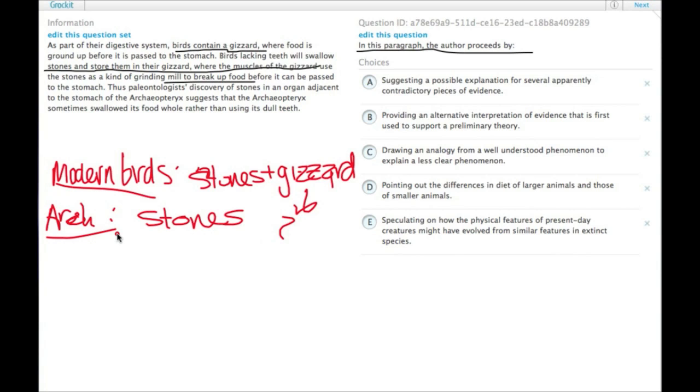Okay, so let's look for that in the answer choices. A: suggesting a possible explanation for several apparently contradictory pieces of evidence. We only have one piece of evidence and that's not contradictory. B: provide an alternative interpretation of evidence that is first used to support a preliminary theory. We only have one interpretation.